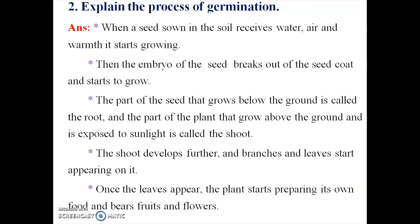Third step: the part of the seed that grows below the ground is called the root, and the part that grows above the ground exposed to sunlight is called the shoot. Fourth step: the shoot develops further and branches and leaves start appearing on it.